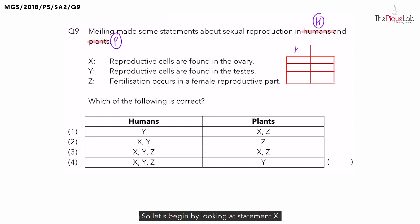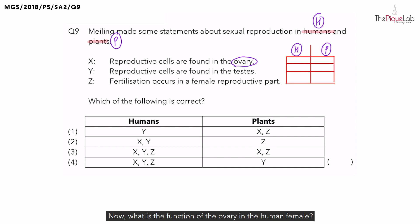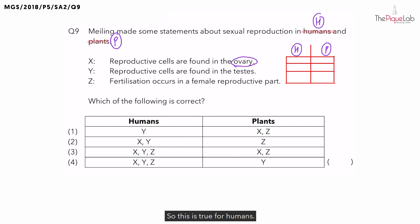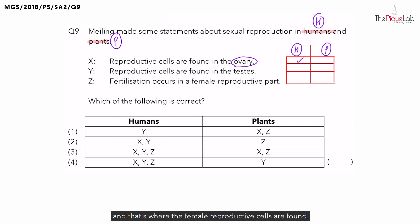Let's begin by looking at statement X: reproductive cells are found in the ovary. What is the function of the ovary in the human female? The ovaries produce and release the eggs, which are the female reproductive cell. So this is true for humans. Now what about plants? The ovary in plants contains the ovule, and that's where the female reproductive cells are found. So this is also true for plants.